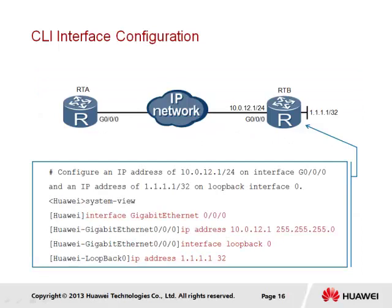It is also important that we understand how to configure IP addresses within the VRP command line interface. We demonstrate that here, looking at RTB and configuring two IP addresses. The first is 10.0.12.1 with a /24 prefix on interface GigabitEthernet 0/0/0, as well as an IP address of 1.1.1.1/32 on loopback interface 0 of RTB.